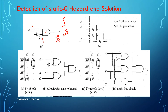Static 1 hazard prevails in a circuit which has an OR gate at the output side. Static 0 hazard prevails in a circuit which has an AND gate at the output side. In the timing diagram, because of the time delay, your output jumps to a high state instead of remaining 0. This condition is called static 0 hazard.